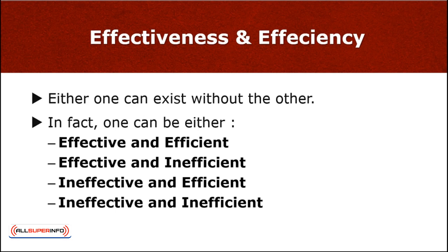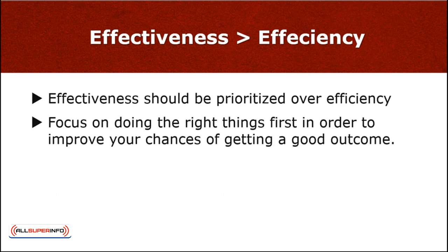Optimal productivity is a combination of both efficiency and effectiveness — that would be our first example, effective and efficient. It is not possible to reach peak productivity levels if lacking in either efficiency or effectiveness. If anything, lacking in both sets you up for either mediocrity or inevitable failure.